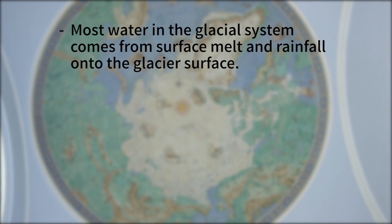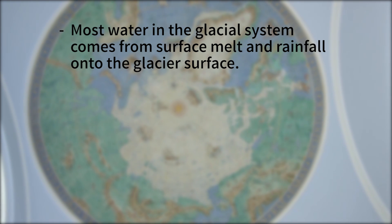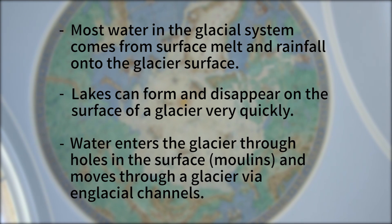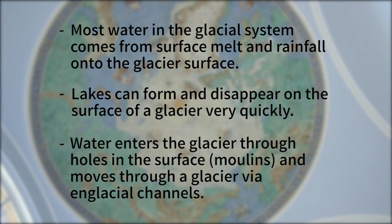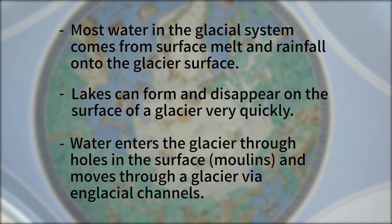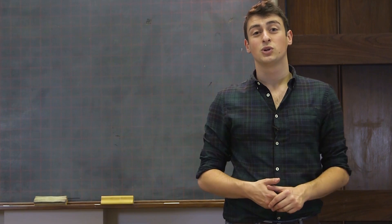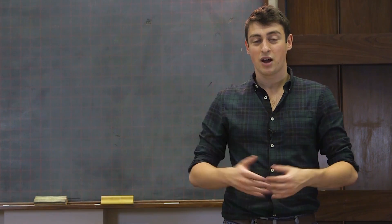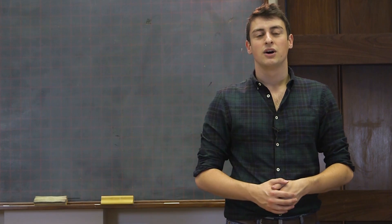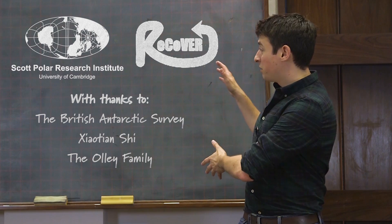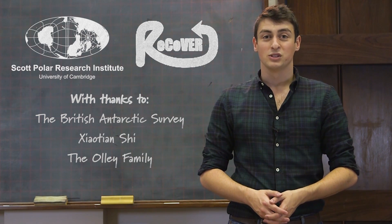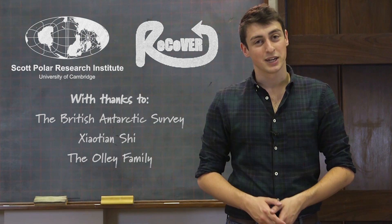In this episode, we covered that most water in the glacial system comes from surface melt and rainfall, that lakes can form and disappear on a glacier's surface very quickly, and that water enters a glacier through holes in its surface and moves through it via englacial channels. All this means water can travel very quickly through a glacial system, providing rapid feedback between changes in climate and precipitation patterns and the glacier's behaviour. Thank you for watching Crash Course Cryosphere. Links for further reading are in the description, and Tom and I will be in the comments for the next two hours. We'd like to thank the Recover Project at Exeter University and the Scott Polar Research Institute. We'll see you next week for more ice action.